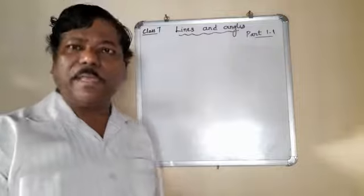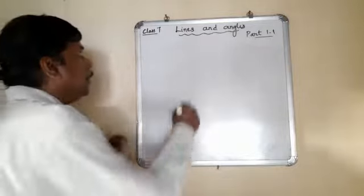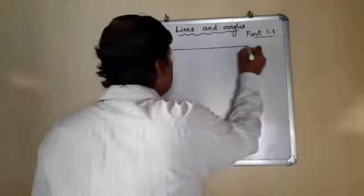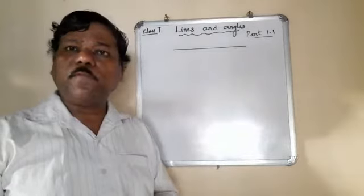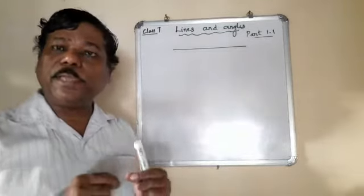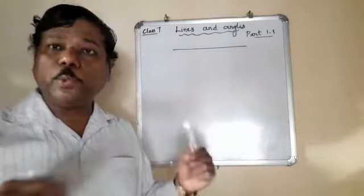What is this line? A segment like this, which has got infinite points joined end to end, constitutes a line. This is a line which is having no length, the length cannot be measured, it has got no thickness. This is extending infinitely on both the directions.